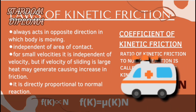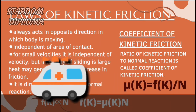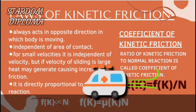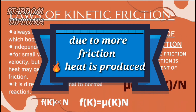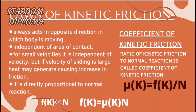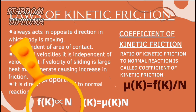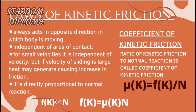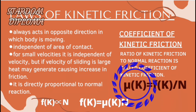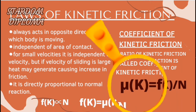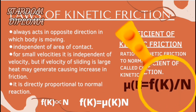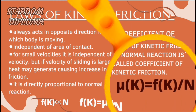If the velocity of a sliding body is small, friction will not depend on it. But if the velocity is large, heat will be generated due to the higher velocity, causing friction to increase, and further heat will be produced. The last law is that kinetic friction is directly proportional to normal reaction: Fk ∝ N. Removing the proportionality symbol, we get μk, the coefficient of kinetic friction. It is defined as the ratio of kinetic friction to normal reaction: μk = Fk / N.